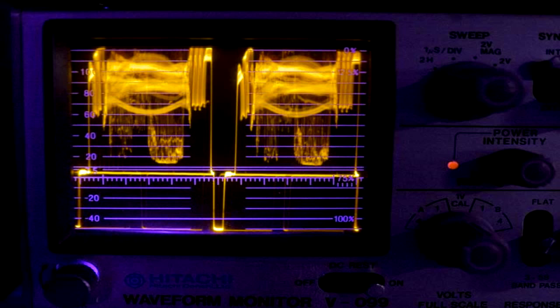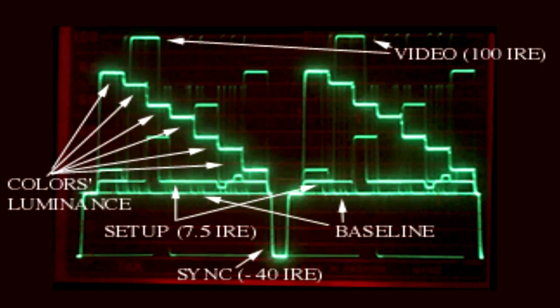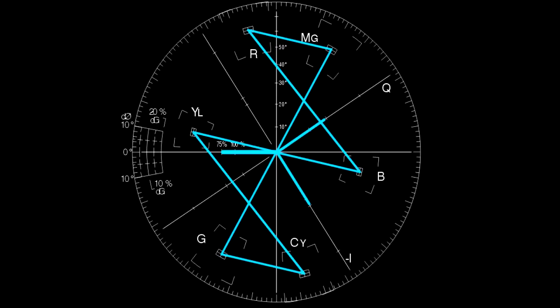The waveform monitor was used to show you video level, and then the vector scope was used to show you color. We'd take something called SMPTE color bars and send a signal of SMPTE color bars, and we would align our signals using our waveform monitors. All the little dots that represented colors would go in the little boxes on the vector scope, and when the dots were in the boxes, your color was in alignment - the correct level, the right phase, and the right level.